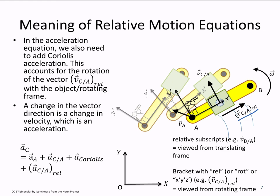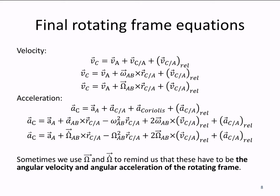And so that's what the Coriolis acceleration represents. So here are our rotating frame equations when we put in our earlier translating frame relative motion, as well as the Coriolis acceleration and our new rotating frame relative velocity and acceleration.